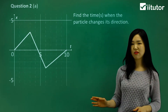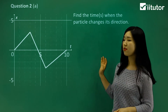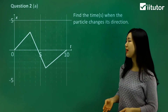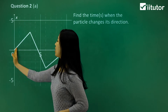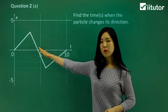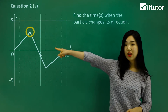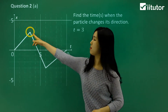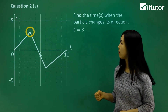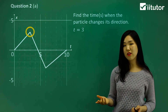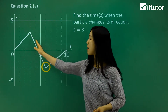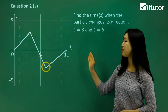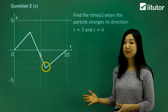Let's try question 2 — there's another type of graph, a zigzag graph. We want to find the times when the particle changes its direction. See how this part is going forward, and from this part on it's going backwards. That tip is when it changes direction from going forward to going backwards. We can find that time, which is t equals 3. And then the next point is when it changes direction again back to forward — that's t equals 6. So t equals 3 and 6 is where it changes direction.